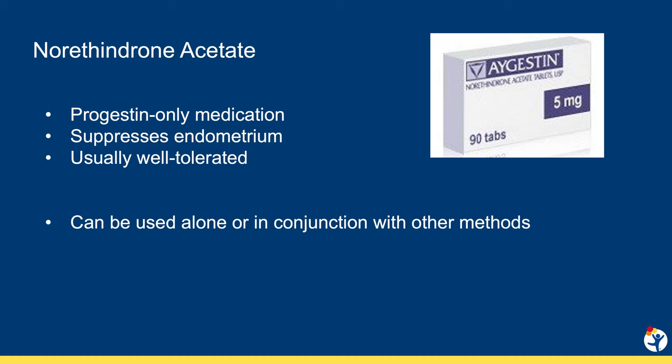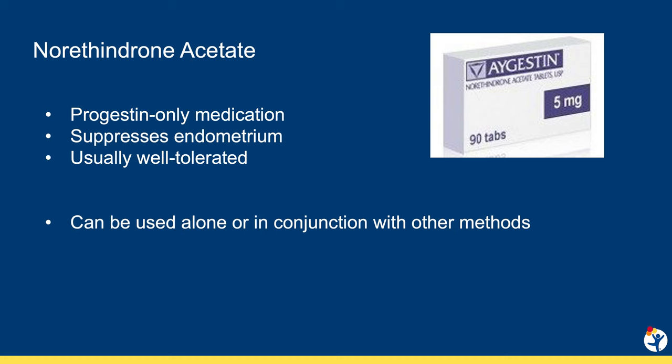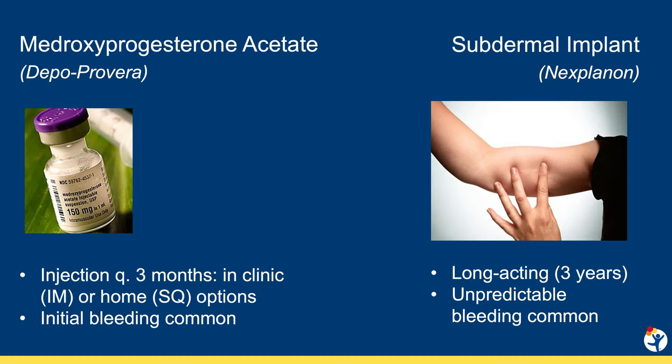It will suppress bleeding in one to two days, and we can taper up the dose when needed without causing nausea, which can occur when multiple birth control pills are used for the same reason. Depo-Provera and the subdermal implant are progesterone-only options which also can be used to treat AUB.